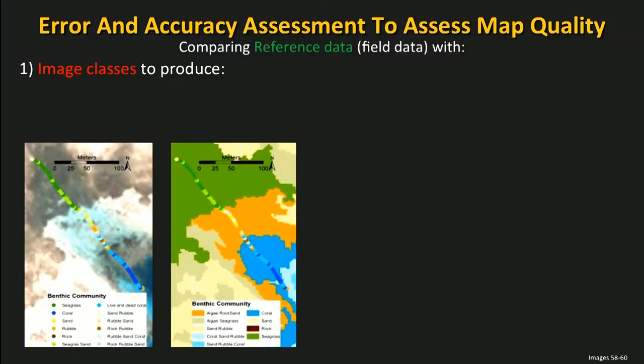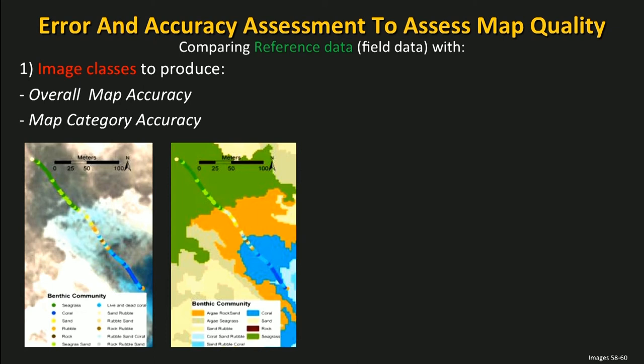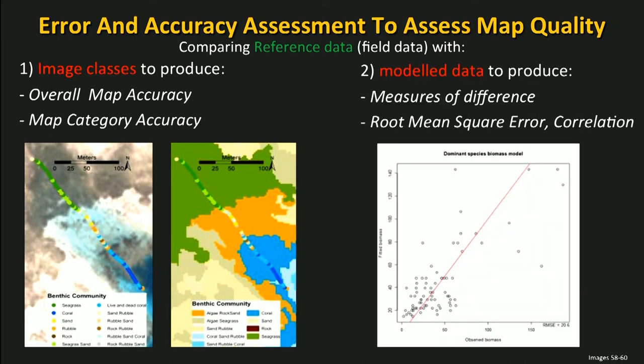The field data is then used for calibration but also for validation, serving as reference data to assess the quality of the image. For thematic maps, this is expressed as an overall accuracy — a number indicating how good the map is — or as individual map category accuracy for each category in the map. For model data, we compare the field data with the model data and look at measures of difference such as root mean squares.